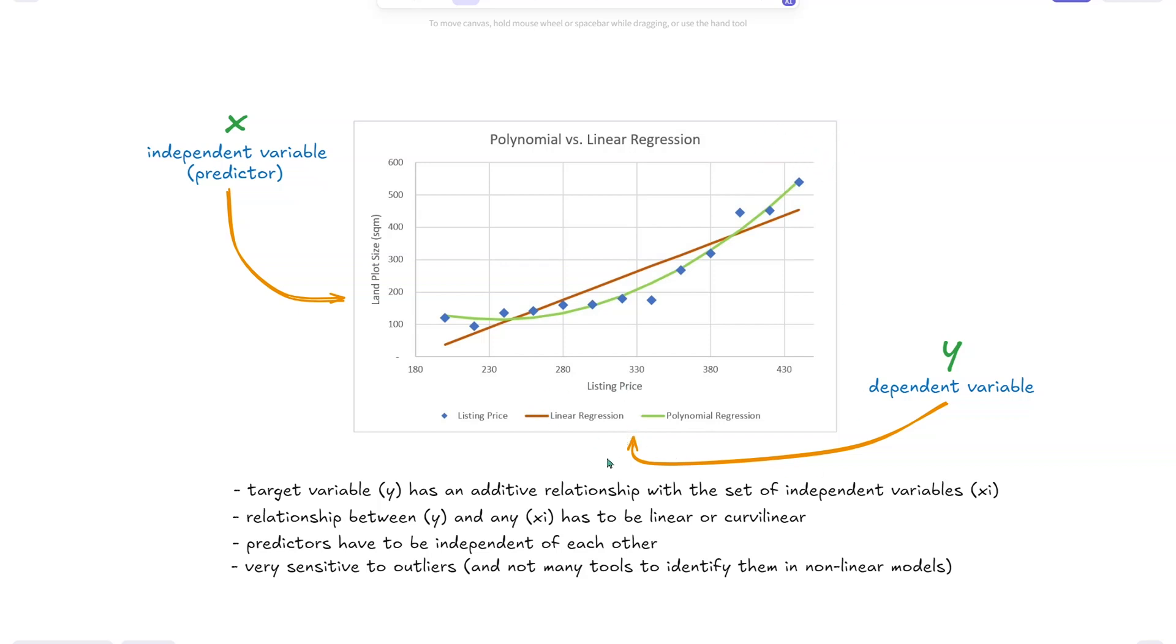A few things that it's important to remember: the target variable y, the dependent variable, has an additive relation with the set of independent variables, meaning that this equation is additive, so we're only adding different independent variables or the effect from them. The relationship has to be linear or curvilinear, and the predictors, the independent variables, have to be independent of each other.